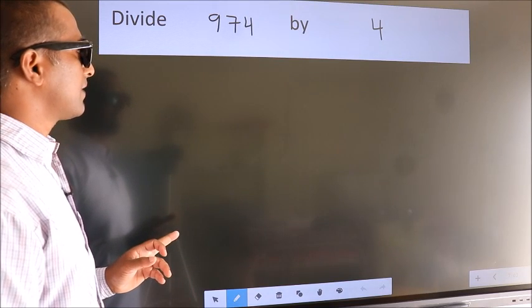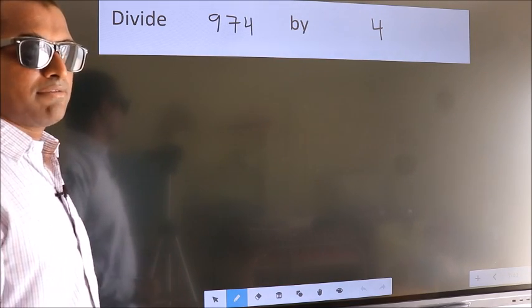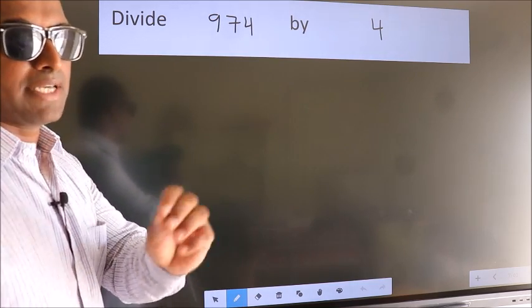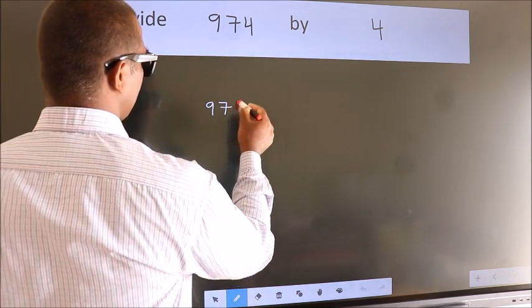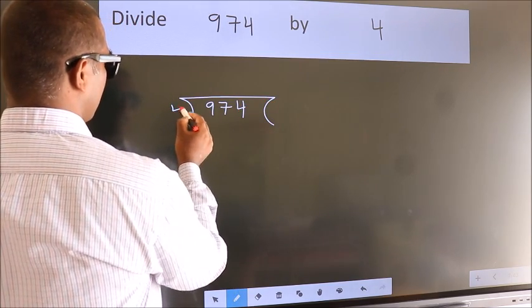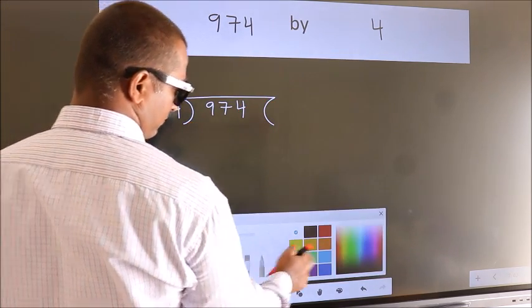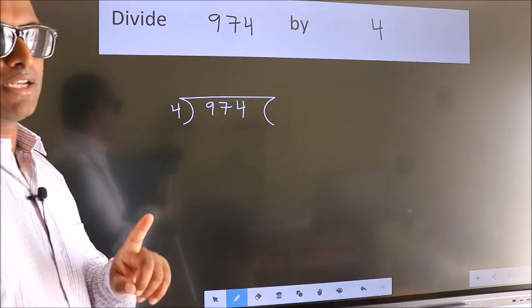Divide 974 by 4. To do this division we should frame it in this way. 974 here, 4 here. This is your step 1.